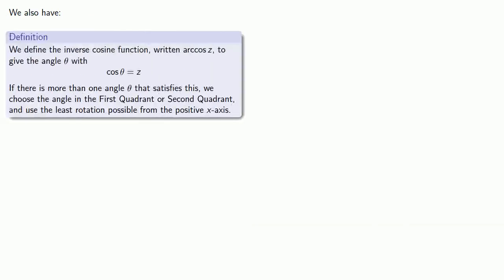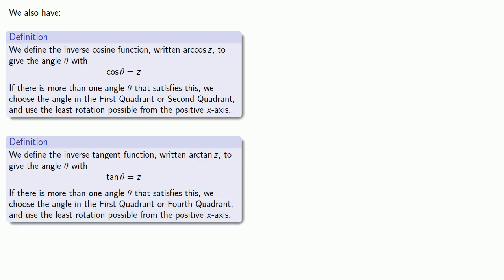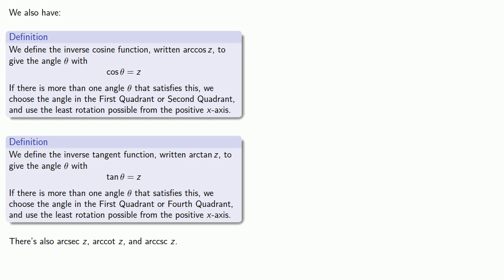Similarly, we have the inverse cosine function written arc cos z, which gives us the angle theta where cosine of theta is equal to z. If there's more than one angle that satisfies this, we choose the angle in the first or second quadrant and use the least possible rotation from the positive x-axis. The inverse tangent function, written arc tan, gives the angle theta where tangent of theta equals z, using the first or fourth quadrant with the least possible rotation. There's also arc secant, arc cotangent, and arc cosecant, but no one really cares about them.